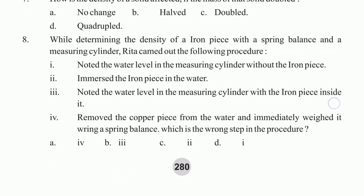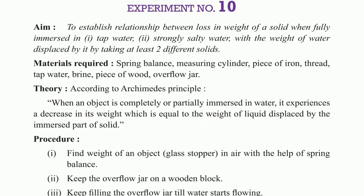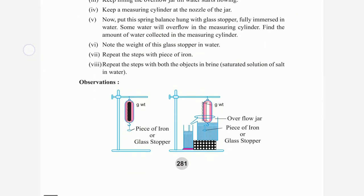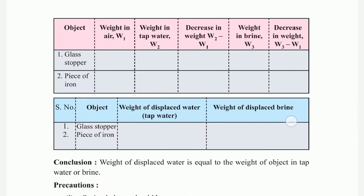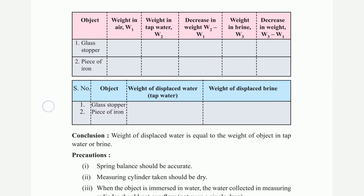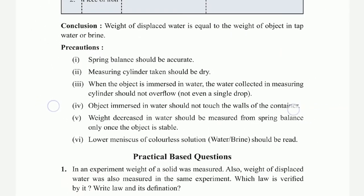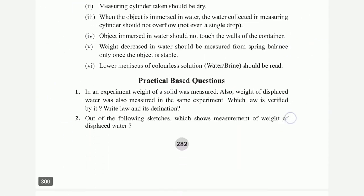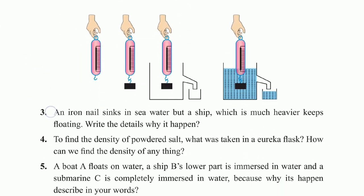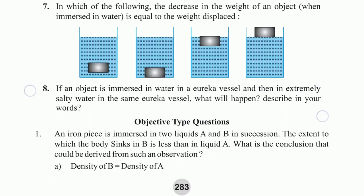Objective questions 3 through 6 for experiment 10. Material required, theory, procedure, observations — weight in air W1, weight in tap water W2. Precautions: spring balance should be accurate, measuring cylinder should be dry. Practical questions, theory, diagram with 7 points, and objective questions.